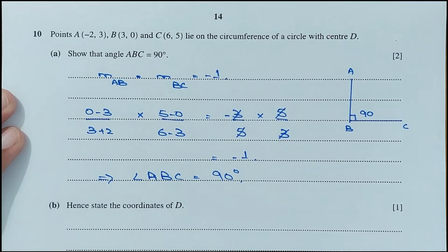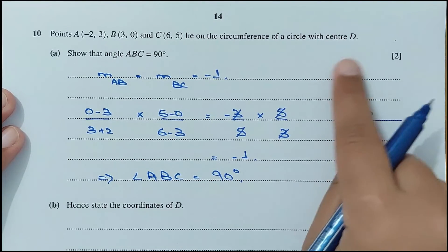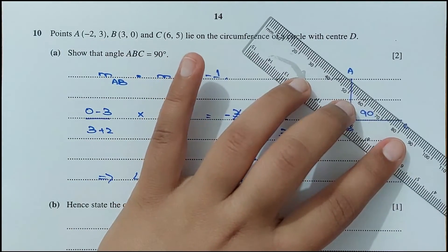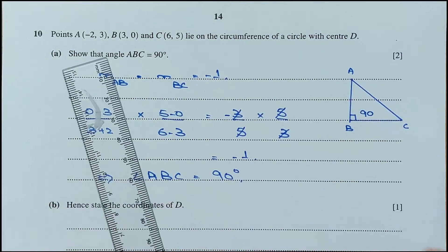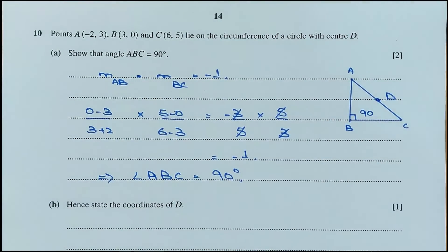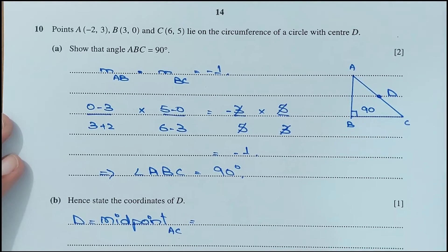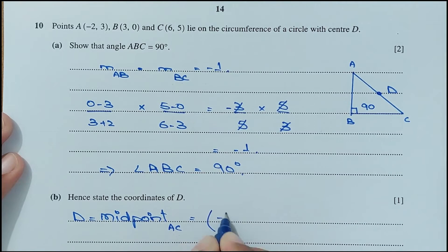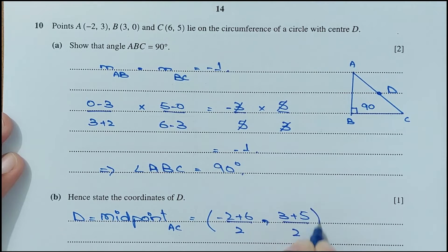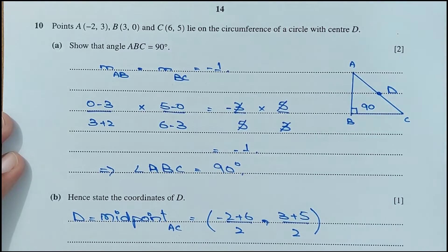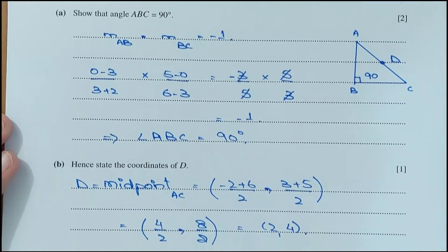For part b, since angle ABC is 90°, B lies on a circle with diameter AC. So the centre D is the midpoint of AC. The midpoint of A(−2, 3) and C(6, 5) is ((−2+6)/2, (3+5)/2) equals (2, 4). The coordinates of D are (2, 4).